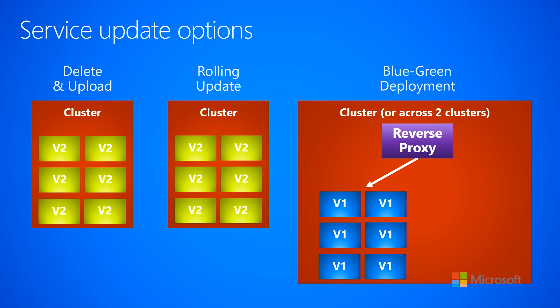This is called a rolling upgrade because you're rolling through the instances, bringing down V1 and bringing up V2. One big advantage is that at no point do you have nothing running. At any given point in time you had at least four out of six instances up and running handling client requests, so you were running at reduced scale but never completely down. However, there is something dangerous — within the cluster you have version one and version two instances running simultaneously, and some client requests may go to V1 while others go to V2, which requires additional consideration.